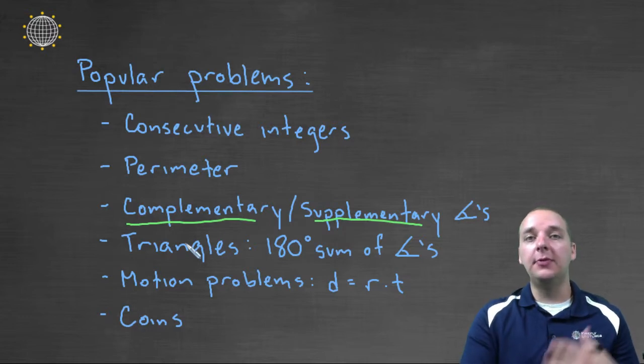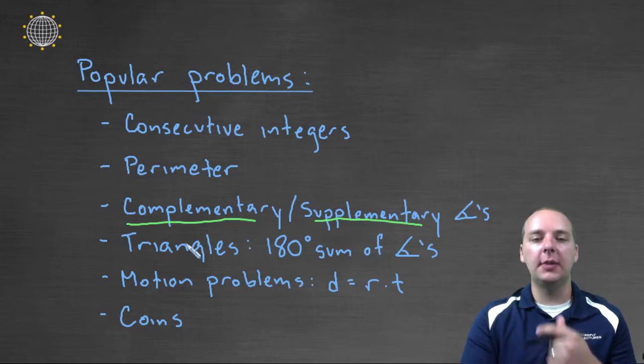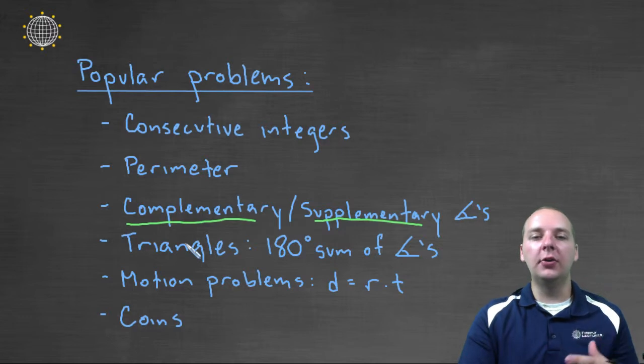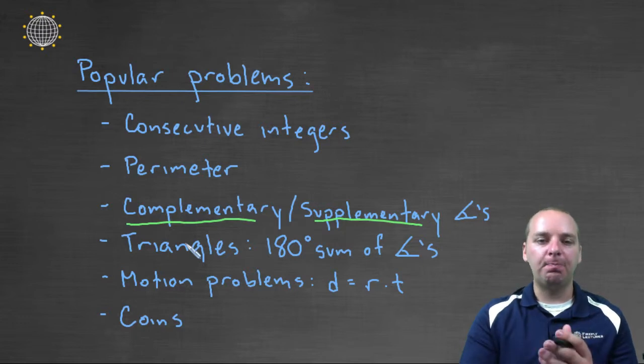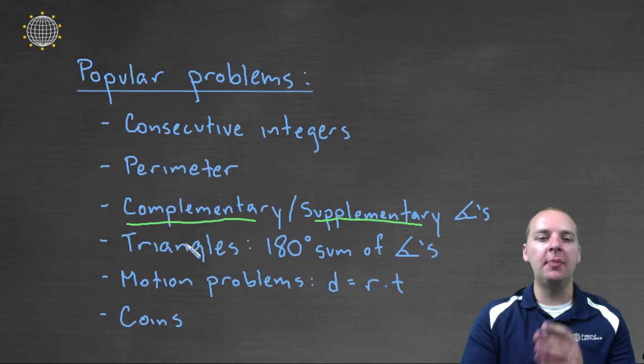Another type of problem that's very popular are what we call motion problems. We'll actually do a couple of these types of problems. This is a basic introductory physics type of word problem that relates distance, rate, and time. The equation that we use here is distance equals rate times time. I won't go into the details here, we'll talk about it in that particular video.